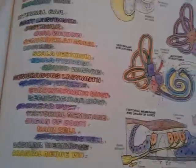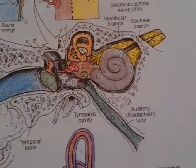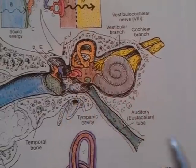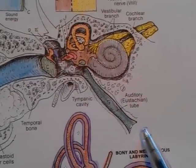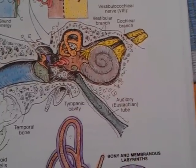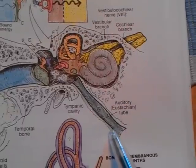Then we have the auditory tube, which is a canal connecting the tympanic cavity with the nasal part of the pharynx. It is directed ventromedially and inferiorly. It consists of a bony and cartilaginous part.